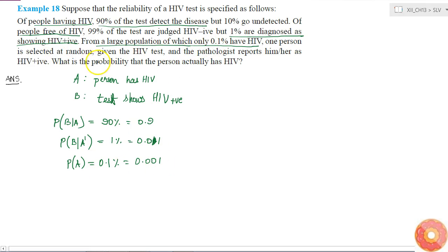He is given the HIV test and the pathologist reports him or her as HIV positive. So now it is known to us that the test report is HIV positive, therefore B is given to us. And what you have to find: what is the probability that the person actually has HIV?